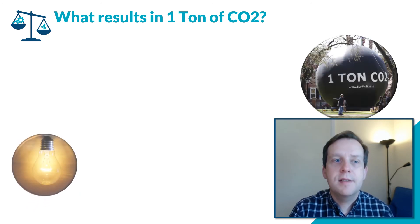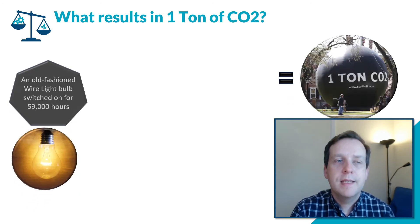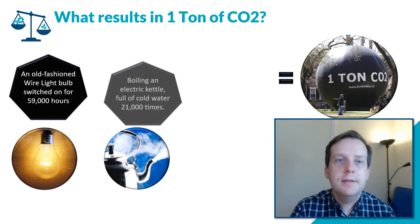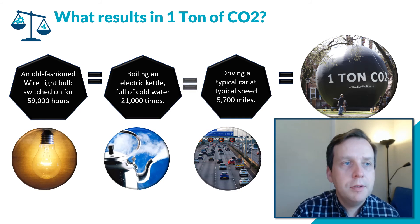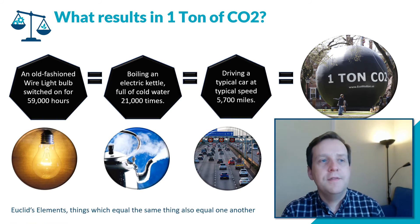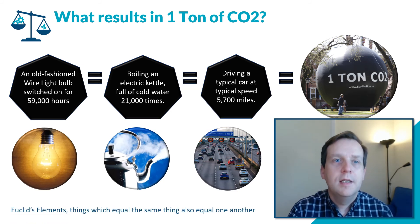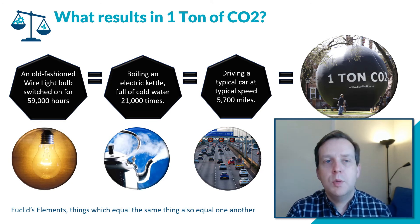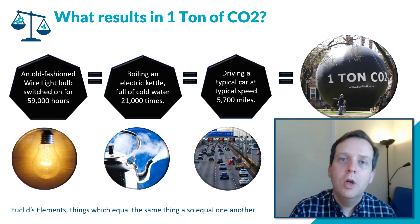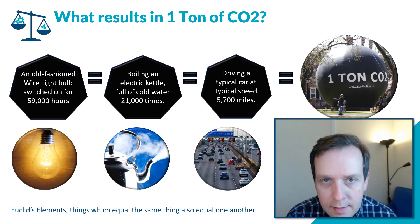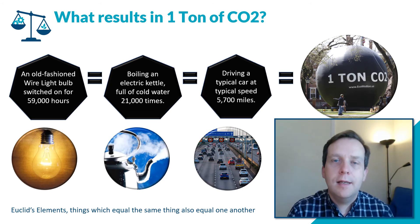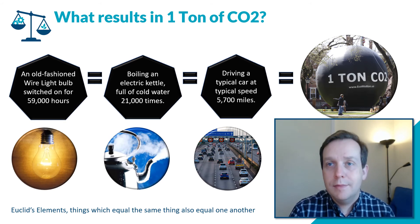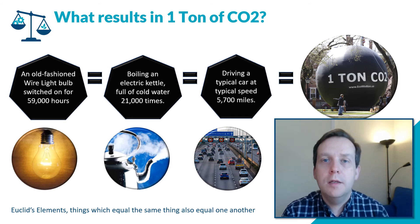Just to summarise: an old-fashioned light bulb can be switched on for 59,000 hours, you can boil a kettle 21,000 times, or you can drive a car 5,700 miles — and each of them is equal to the others, and each of them is equal to one tonne of CO2.